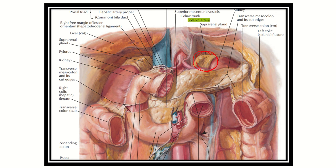Here we can see the left adrenal gland with some other closely related structures. First, the kidney is directly related. Then we can see the splenic artery, and just below the splenic artery there is the pancreas, so both the splenic artery and pancreas are related to the left adrenal gland. The abdominal aorta and celiac trunk are also closely related.